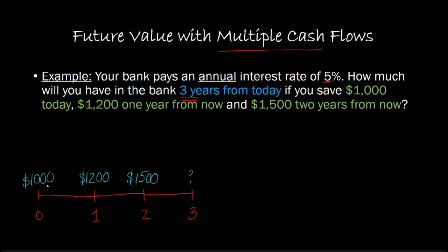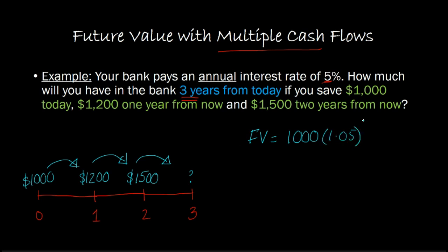The key here is to realize that the sooner you make a deposit, that deposit earns interest for a longer period of time. So the future value of the $1,000 is 1,000 times 1.05 raised to the power of three, because it's going to earn interest in year one, year two, and year three. By the end of year three, this $1,000 would have become $1,157.625.